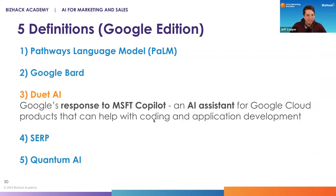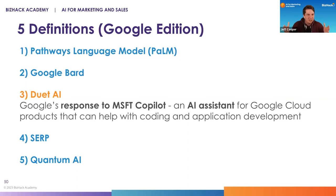Duet AI is Google's response to Microsoft Copilot. It's really an AI assistant for Google's cloud products. Their initial rollout has been focused on developer-heavy things like coding or chatbot development. But this is the platform that will be rolling out to things like Google Docs or even Gmail to help you incorporate AI into your workflow.